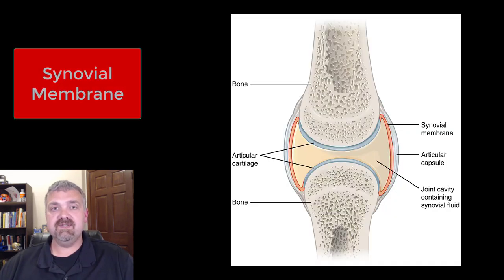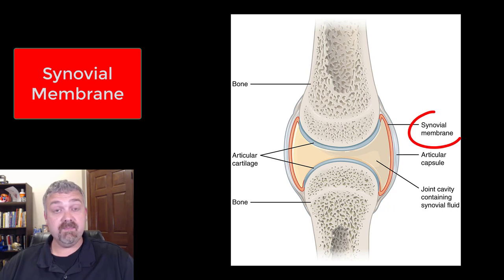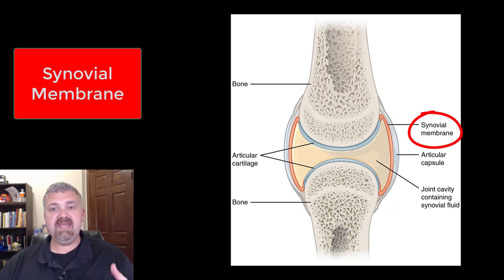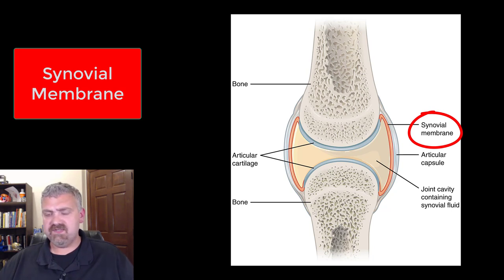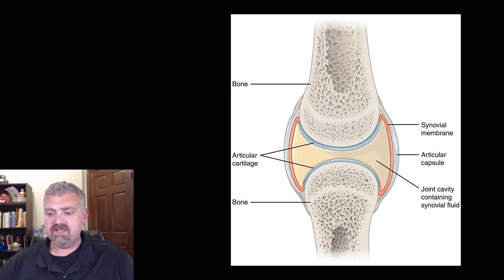Lastly, here is a typical example of a synovial joint with synovial membranes that produces synovial fluid. This is going to be anywhere two of your long bones come together — probably like between your fingers or toes or something. So that would be a synovial membrane.